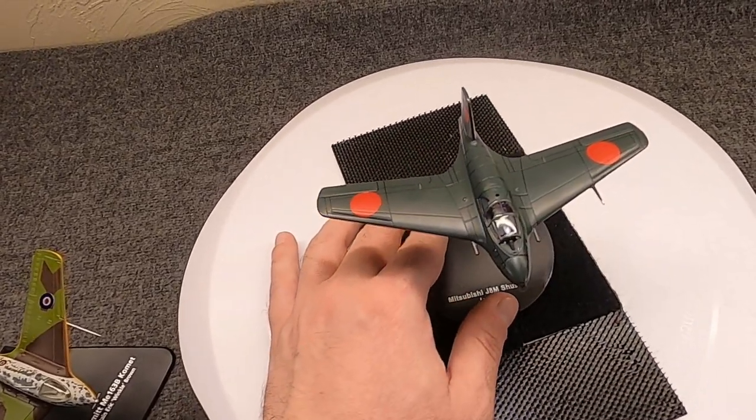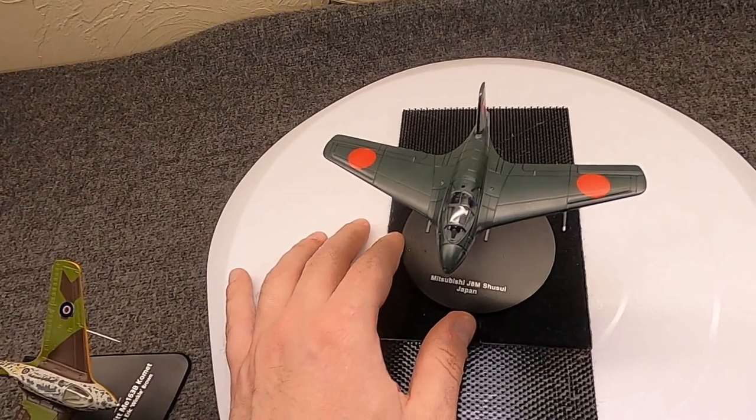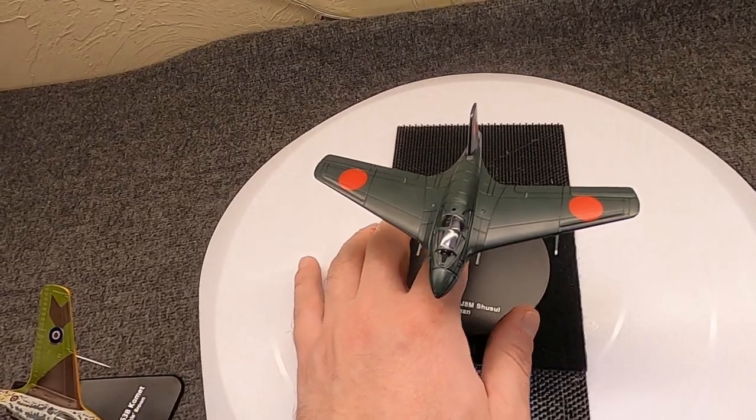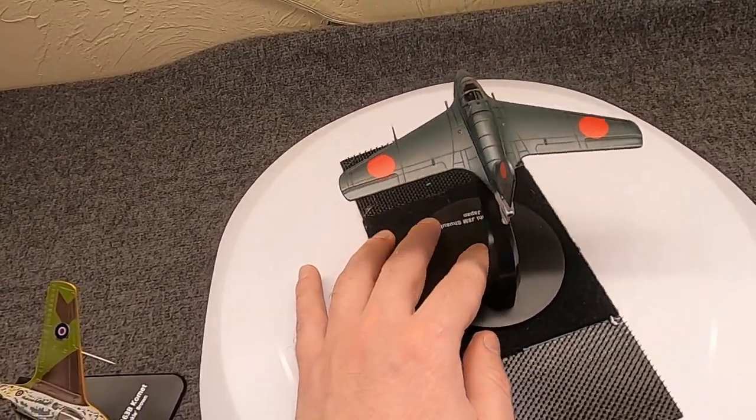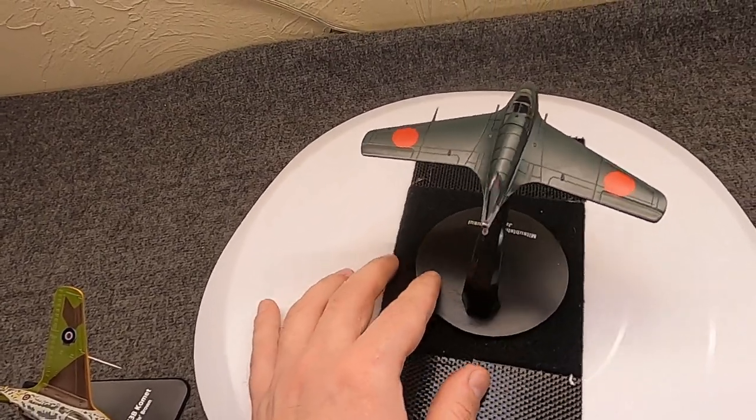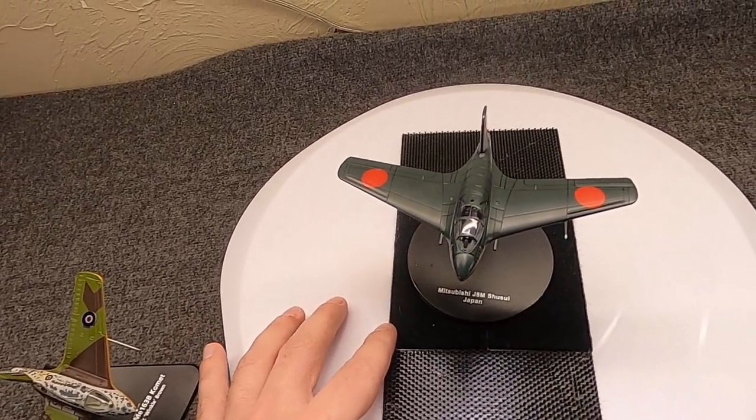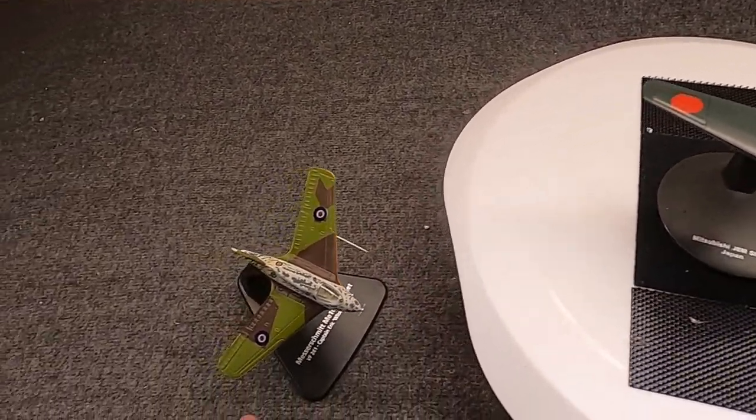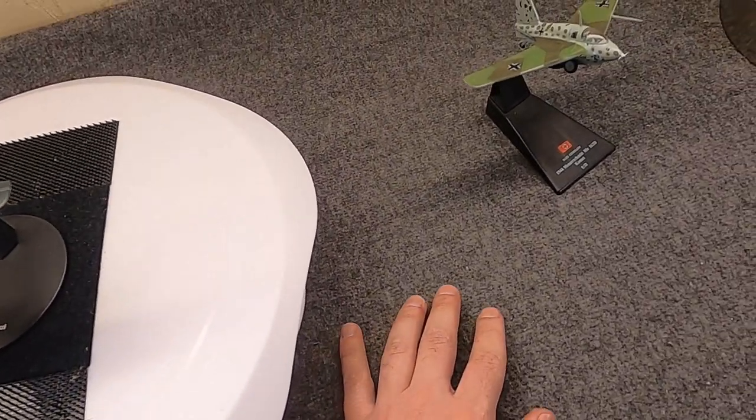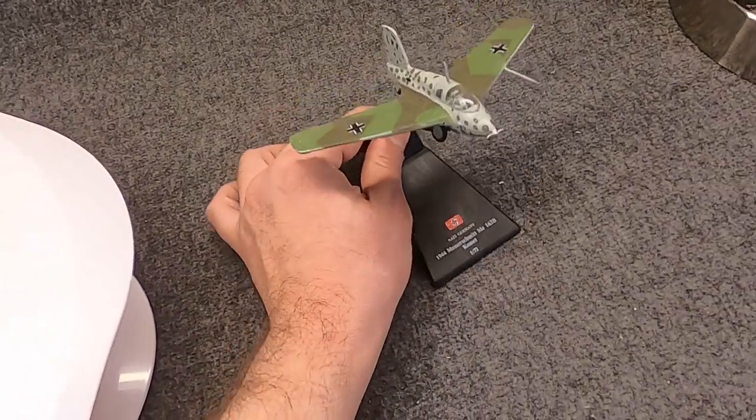Because Corgi, Hobbymaster are never going to do this aircraft. This is the Japanese Navy version, by the way, Mitsubishi J-8M-1, known as the Shusui, which is basically what was intended to be a licensed copy of the German Messerschmitt ME-163 Comet. Although, life didn't quite work out that way.